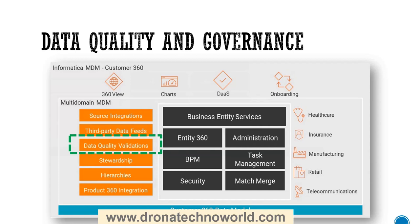Informatica Customer 360 offers robust data quality and governance capabilities. It helps to cleanse and standardize customer data, which eliminates duplicates, inaccuracies, and inconsistencies. This is also applicable for traditional on-premise MDM, but the way it is implemented in the cloud version is so easy that the development cycle is much quicker than on-premise MDM. By maintaining data integrity, you can trust the insights derived from this platform and make correct, informed decisions for your business.